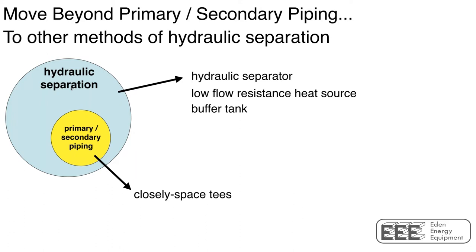Primary-secondary is one way to achieve a desirable effect that we will call hydraulic separation, and it's very simple. Hydraulic separation is whenever you have two or more simultaneously operating circulators, we don't want those circulators to interfere with each other, especially if they're different size circulators. The ideal condition would be each circulator creating a flow rate completely independent of what other circulators are doing in the system. So if circulator number one is operating at 10 gallons a minute and we turn on another circulator, that flow doesn't change at all, and vice versa.